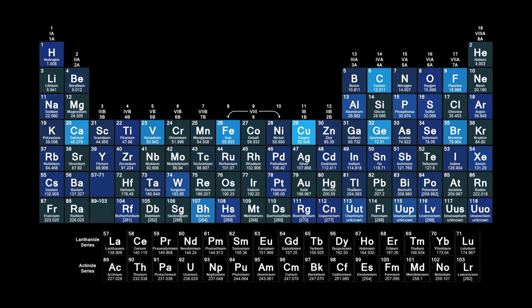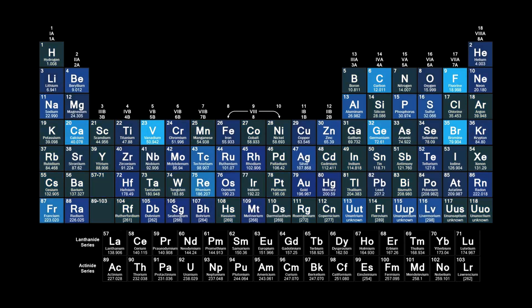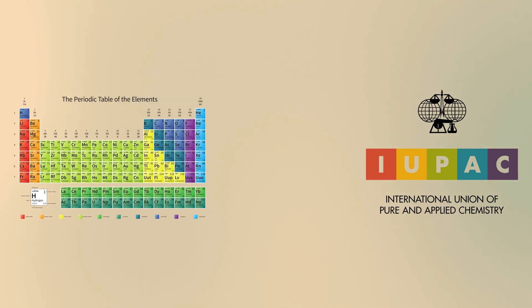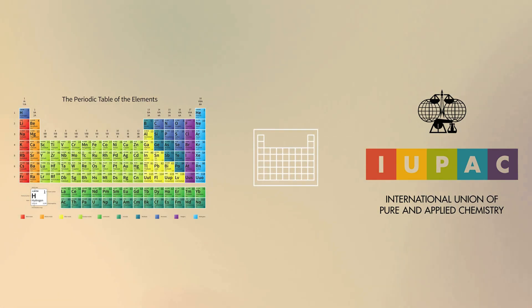The first step is getting a periodic table to study. The table is updated occasionally, and the International Union of Pure and Applied Chemistry has the most current tables. You can refer to online interactive clickable tables, or find free printable tables, including blank ones, which are useful for practicing.